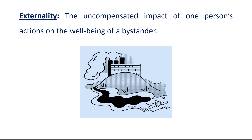Externality is the uncompensated impact of one person's actions on the well-being of a bystander. As you can see in this figure, the pollution or chemicals emitted by a factory provide a negative externality, harming aquatic animals living in the pond. The market on its own has failed to produce an efficient allocation of resources, so a government institution is required to impose restrictions and regulations to control this negative externality.